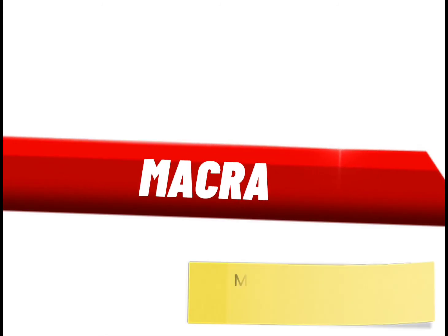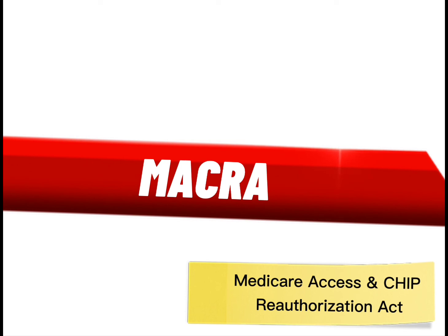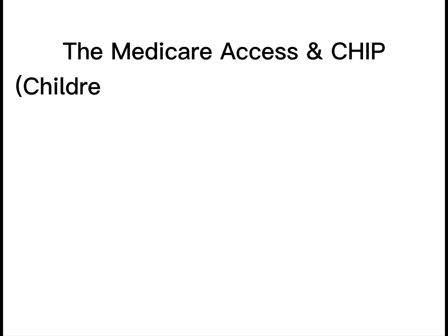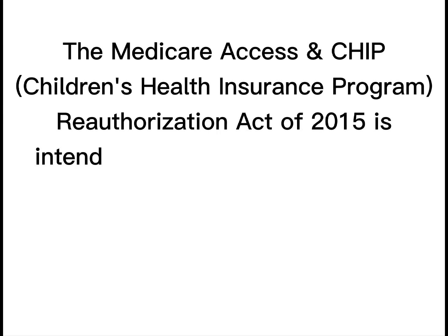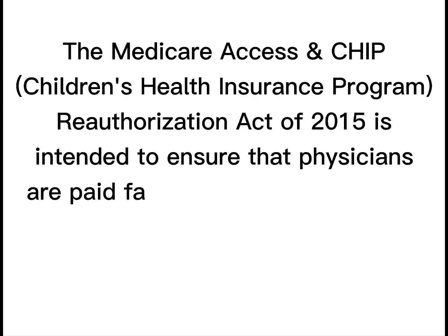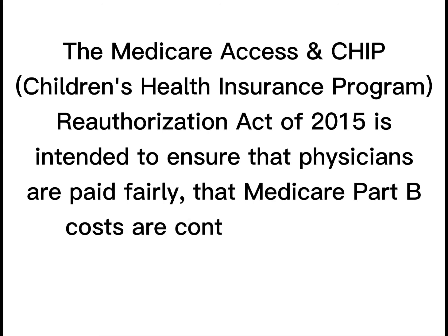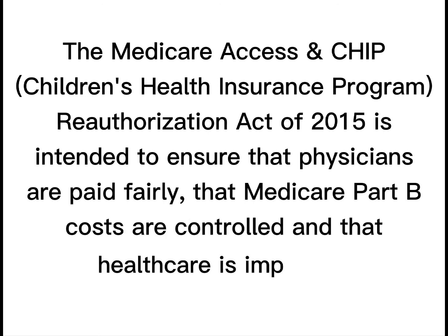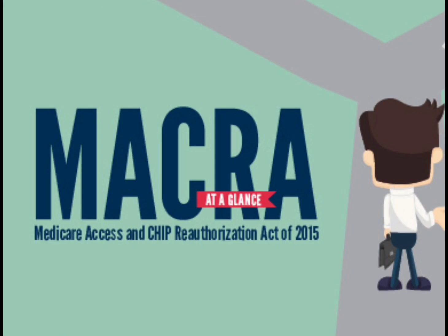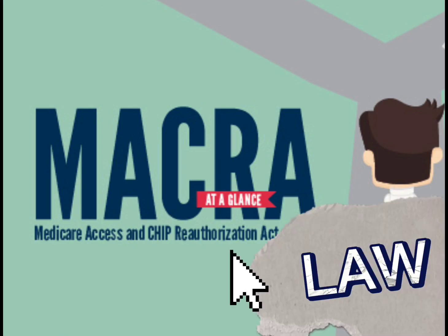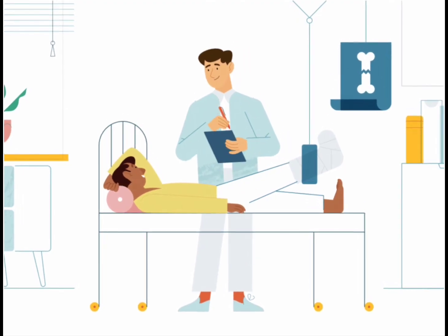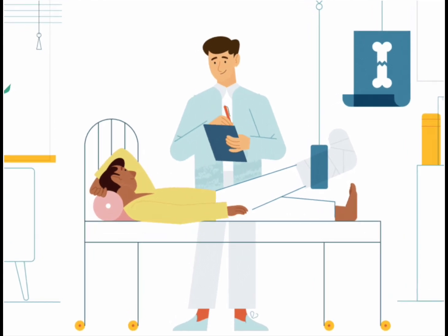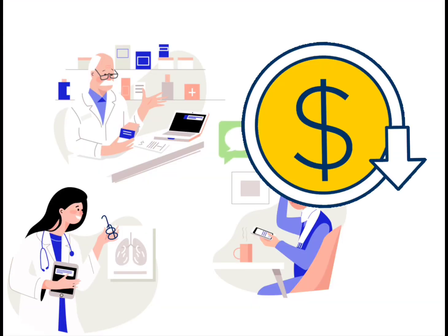Next is MACRA, the Medicare Access and CHIP Reauthorization Act. The Medicare Access and CHIP — Children's Health Insurance Program — Reauthorization Act of 2015 is intended to ensure that physicians are paid fairly, that Medicare Part B costs are controlled, and that health care is improved. MACRA significantly changed how the federal government pays physicians. Its ultimate goal is to improve overall patient health and to reward the practices that succeed in doing so while maintaining and lowering costs.